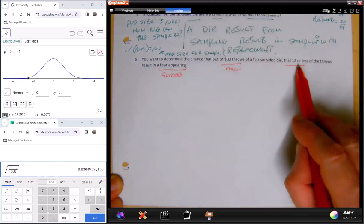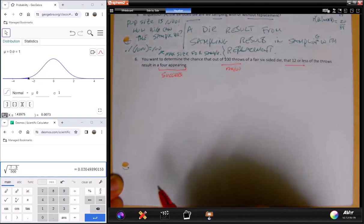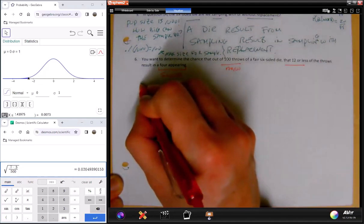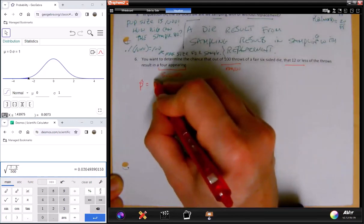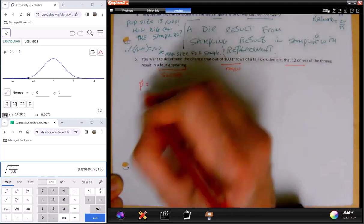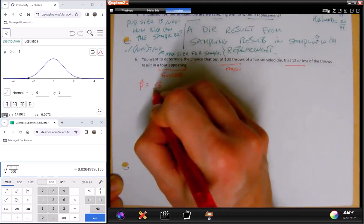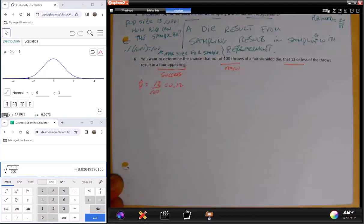That's what I'm after, and I want 12 of those. What's the chance that 12 or less are fours out of the 100 throws? Remember that p-hat is the number of successes over the sample size, so it's going to be 12 over 100, that is 0.12.